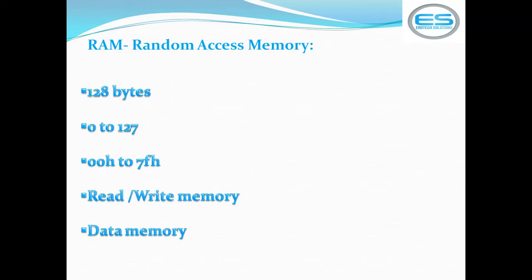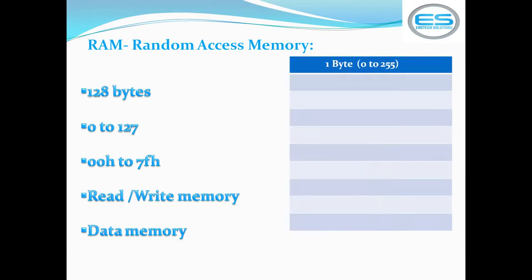The next block is Random Access Memory (RAM), which allows storing data temporarily. For the 8051 microcontroller, there is 128 bytes of data RAM, with addresses from 0 to 127 in decimal, or 00H to 7FH in hexadecimal. This memory allows both read and write operations and is called data memory in microcontrollers. Each location allows one byte value.